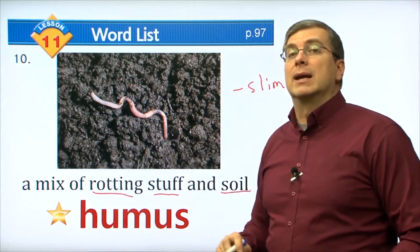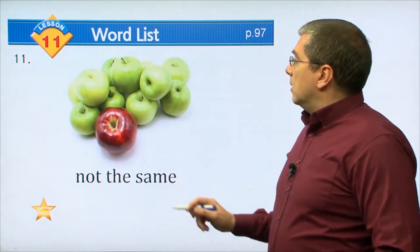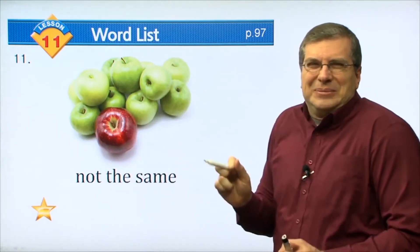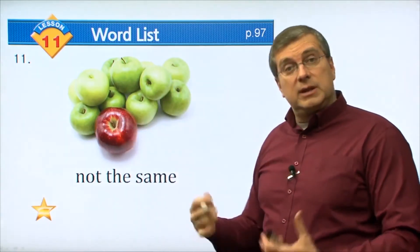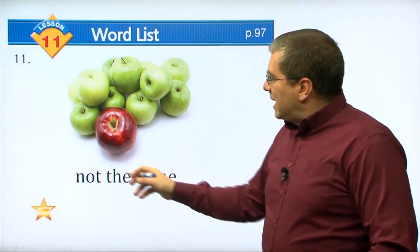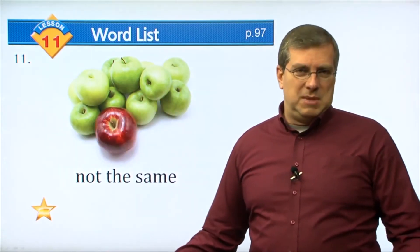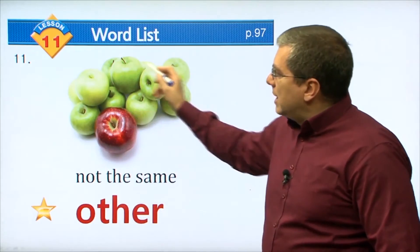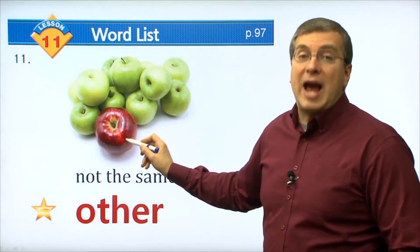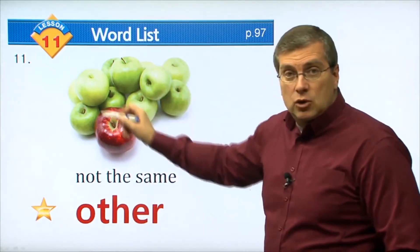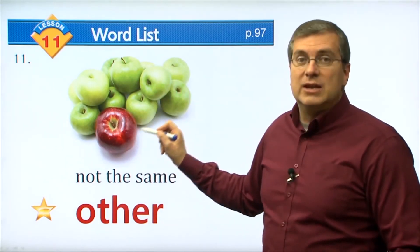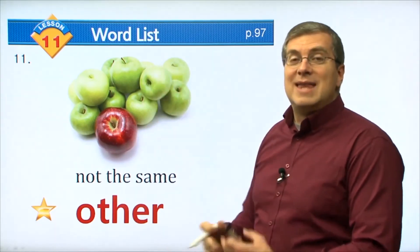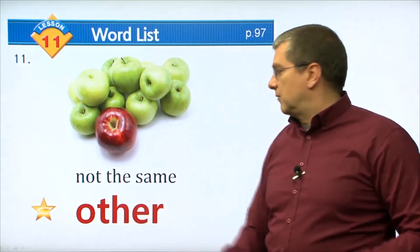Now here we have an interesting picture. We have many green apples - they're a little sour. And then we have one red apple - it's a little more sweet. When we say not the same, there's many words that mean not the same. We're going to look at one word here: other. These are all the green apples, but the other apple is red. I have many green apples, but the other apple is red. Something that is not the same as what you have, that is the other.